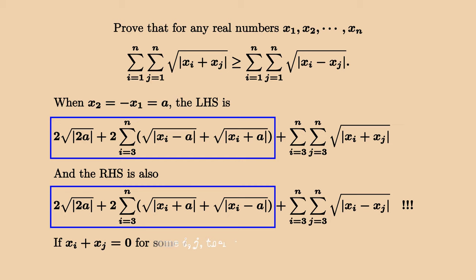This means if we find two opposite numbers in the sequence, then we reduce the inequality to a case of n minus two variables, which allows us to perform induction.